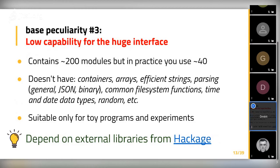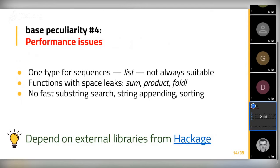Another problem with base is performance issues. The only type for containers or sequences is the list, which is great but not always suitable and doesn't work for every use case. Some functions are not fast when used with lists. Unfortunately, some functions even have space leaks in base — functions like sum, product, or foldl. Since there are no efficient data structures, there are no efficient algorithms. The code you write using base will be slow by default, and in most cases your code will be really slow.